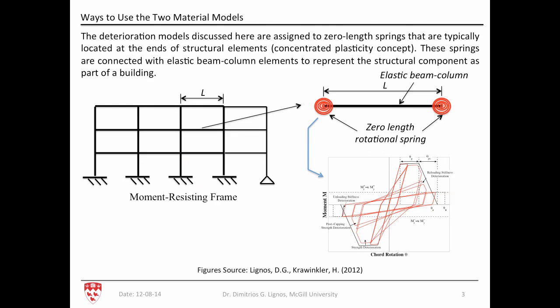The way to use these two material models is essentially by assigning zero-length springs that are typically located at the end of structural elements. This is a concentrated plasticity concept. These springs are connected with elastic beam columns to represent the structural component as part of a building. Here's an example of a three-story moment-resisting frame, with one beam shown with two zero-length rotational springs assigned to it.